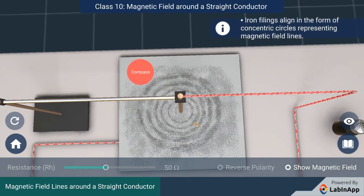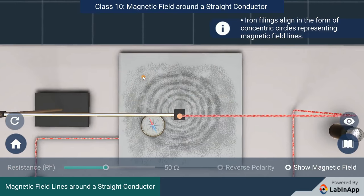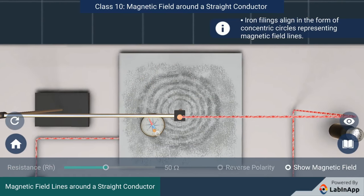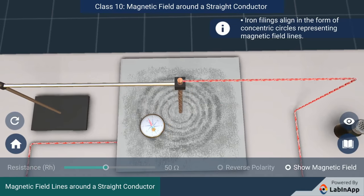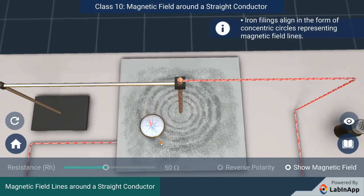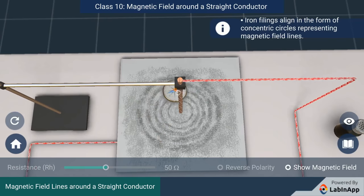Let us place the compass over these lines. The direction of the north pole of the compass represents the direction of these magnetic field lines. By moving the compass over the lines, we can see the direction at each point.